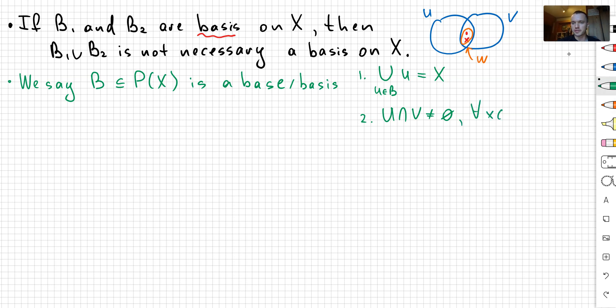So in other words, for any x that belongs to intersection u and v, there exists w belonging to B, such that x belongs to w and w belongs to intersection of u and v. So every time when I'm going to give you the collection of a subset of x, you can check that that collection is going to be a base if these two properties are going to be satisfied.